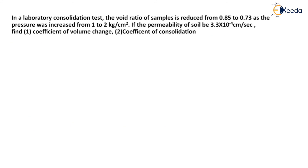Now let us begin with the numerical. In a laboratory consolidation test, the void ratio of a sample is reduced from 0.85 to 0.73 as the pressure was increased from 1 to 2 kg per cm². If the permeability of the soil is 3.3 × 10⁻⁴ cm per second, find: first, the coefficient of volume change, and second, the coefficient of consolidation.